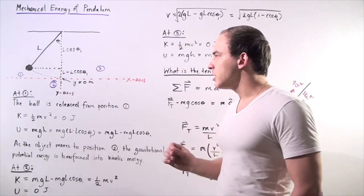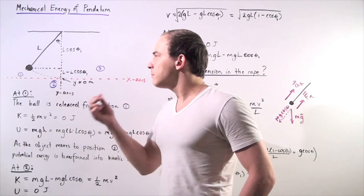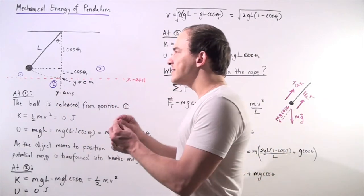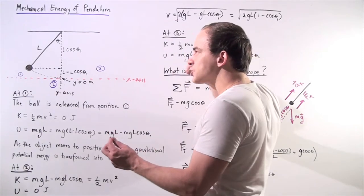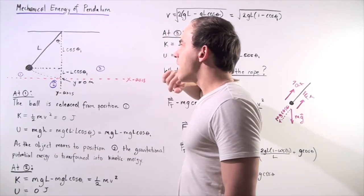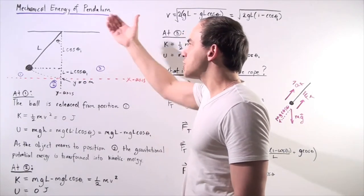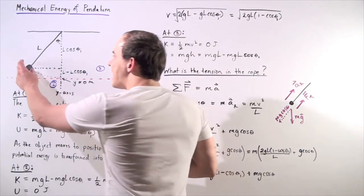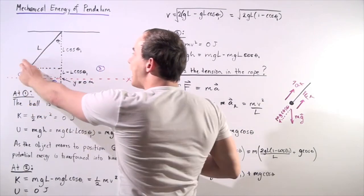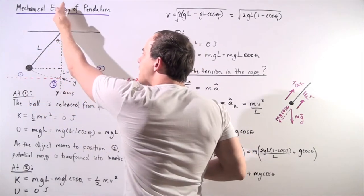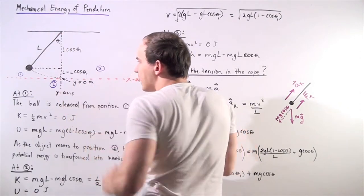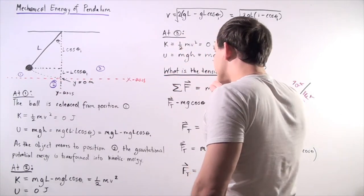Let's begin by constructing our pendulum. We have a ball of mass m attached to a massless cord of length l, with the other end attached to a ceiling or surface. We take our ball and the rope makes an angle theta one with respect to our y-axis. We choose this to be the y-axis and this to be the x-axis.